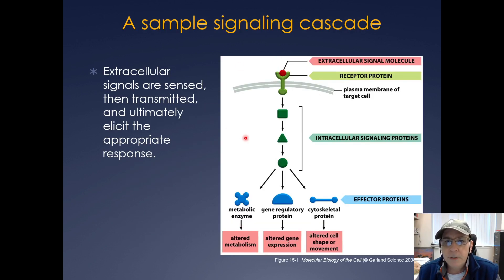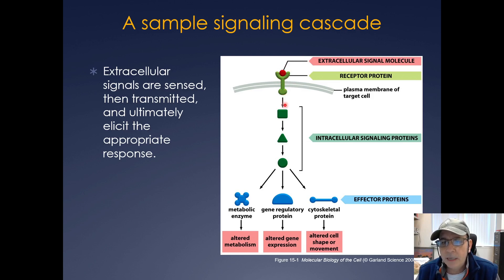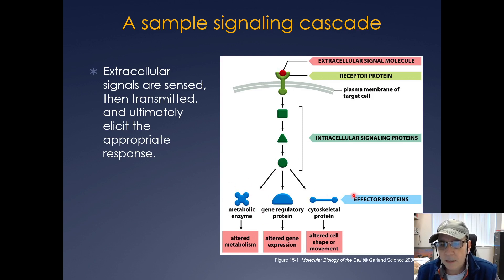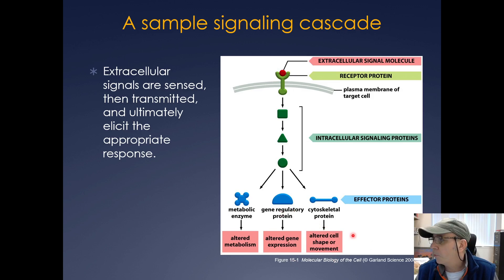Here's a sample signaling cascade. Extracellular signals are typically sensed by the cell, and oftentimes there'll be a receptor on the plasma membrane that can bind to the signaling molecule. A signaling cascade is then transduced through intercellular signaling proteins, which will ultimately signal to various effector proteins — metabolic enzymes, cytoskeletal proteins, or gene regulatory proteins — leading to altered metabolism, altered gene expression, or changes in cell shape or movement.